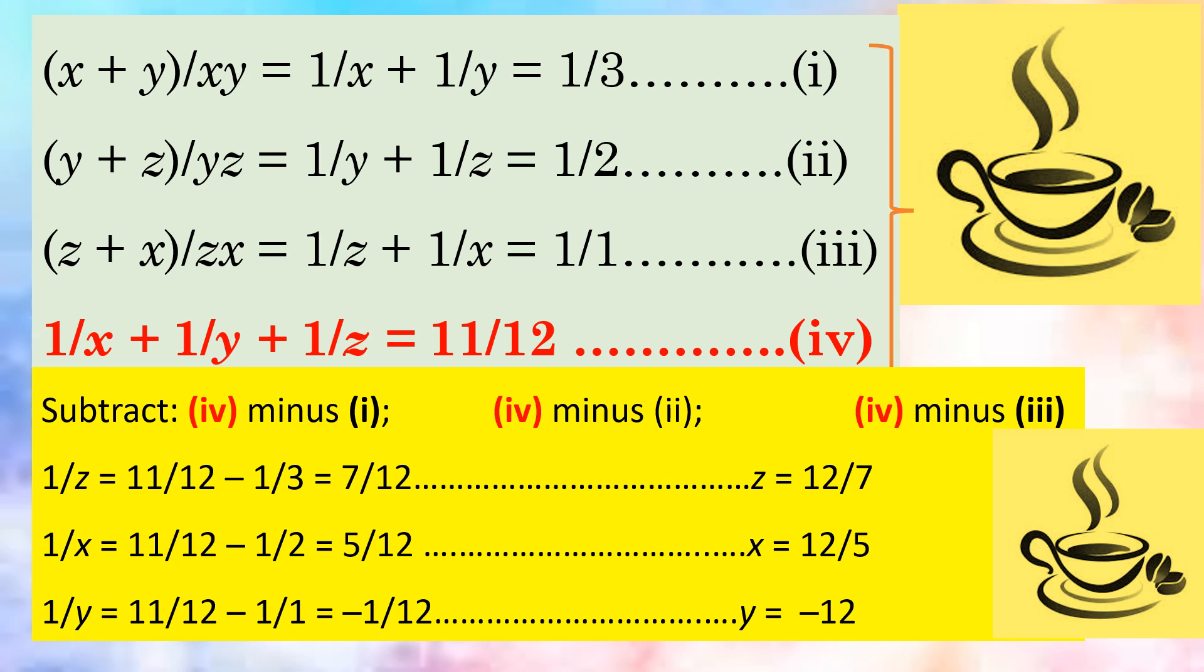From the sum of 1 by x plus 1 by y plus 1 by z, subtract the value of 1 by z plus 1 by x, and we get the value of 1 by y.